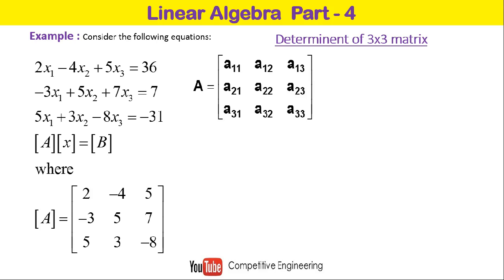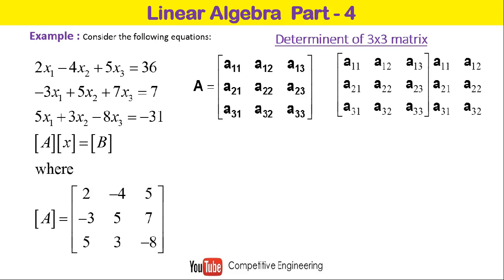For the diagonal method, take the 3×3 coefficient matrix and write the first two columns again to the right of the matrix. Then mark the diagonals going from top-left to bottom-right — these are the red diagonals, each containing three elements. Also mark the diagonals going from top-right to bottom-left — these are the blue diagonals. Multiply the elements along each red diagonal: a11·a22·a33, plus a12·a23·a31, plus a13·a21·a32.